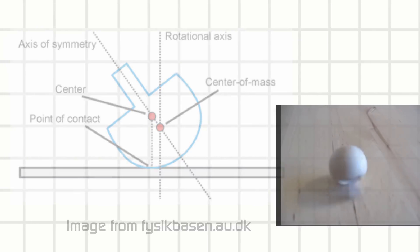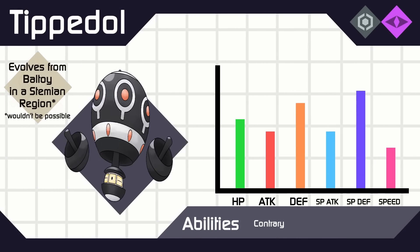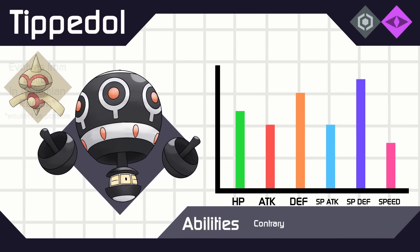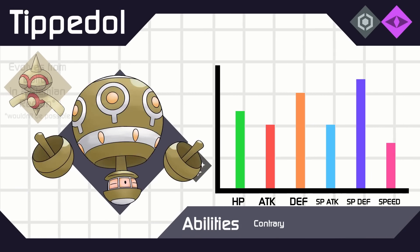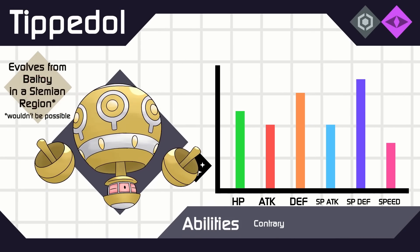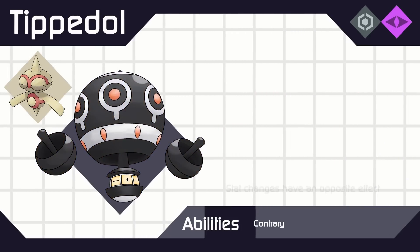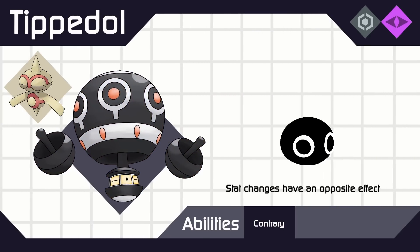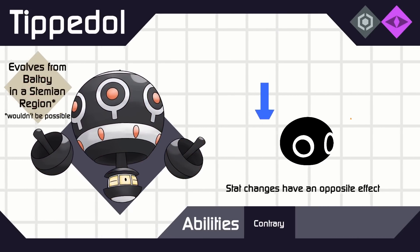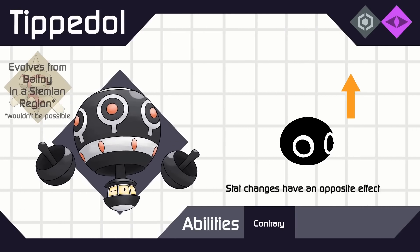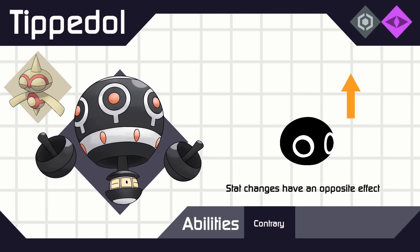So here's Tippydoll, a Steel-type that's upside down. What I had in mind was that outside of battle the bigger part would be on the ground, but then they spin and flip themselves over whenever they enter combat. I'm not entirely sure if I want to make a new design of this concept for my personal project.